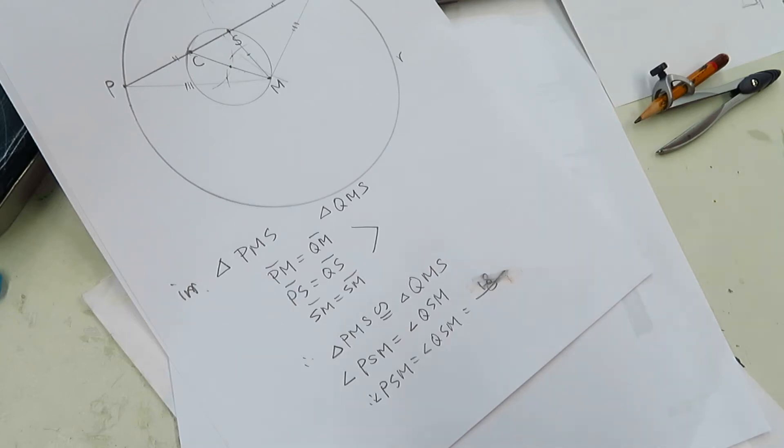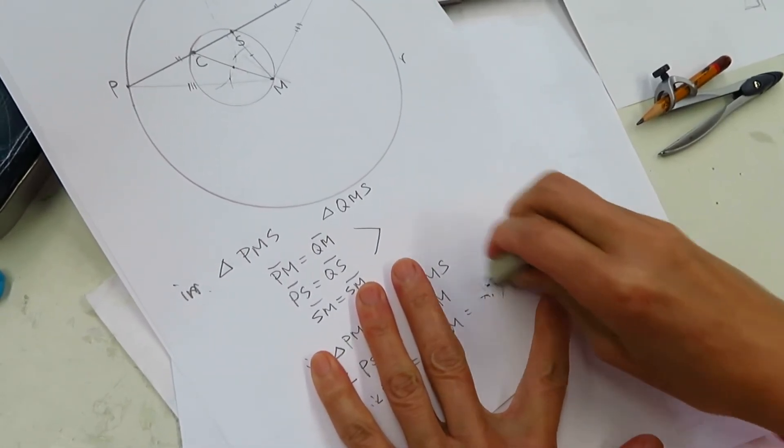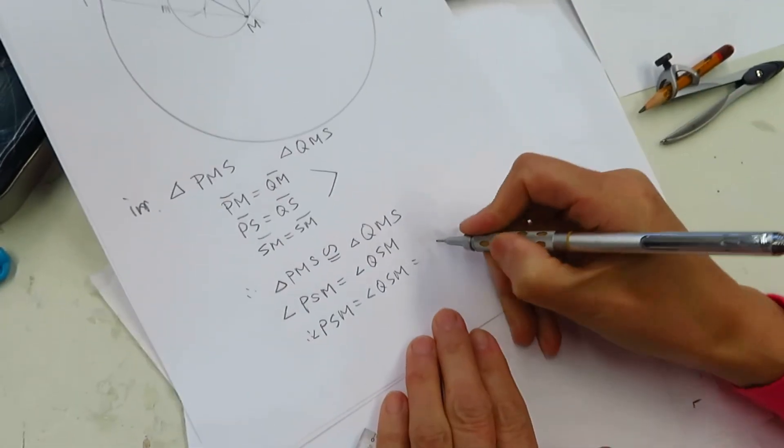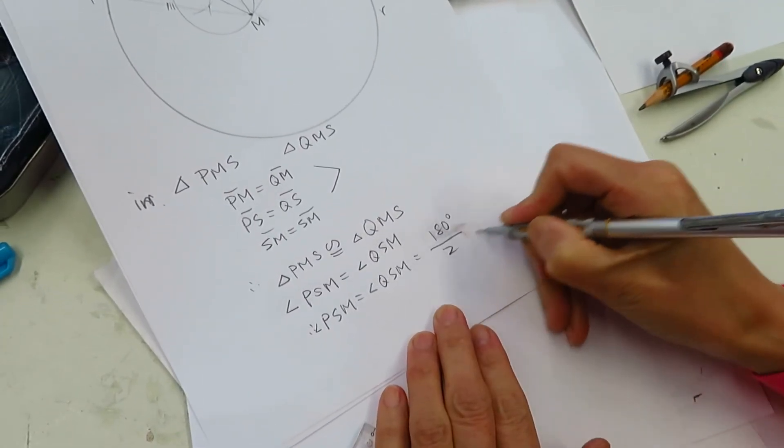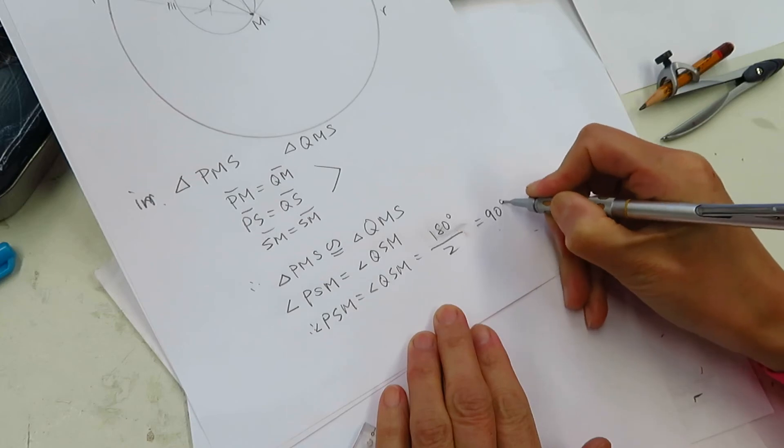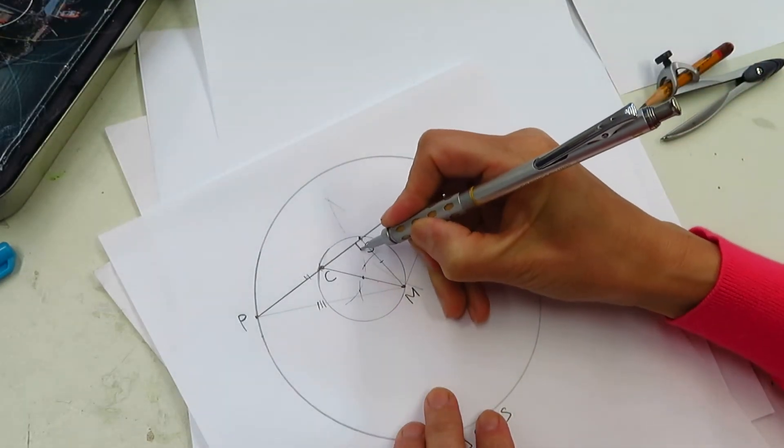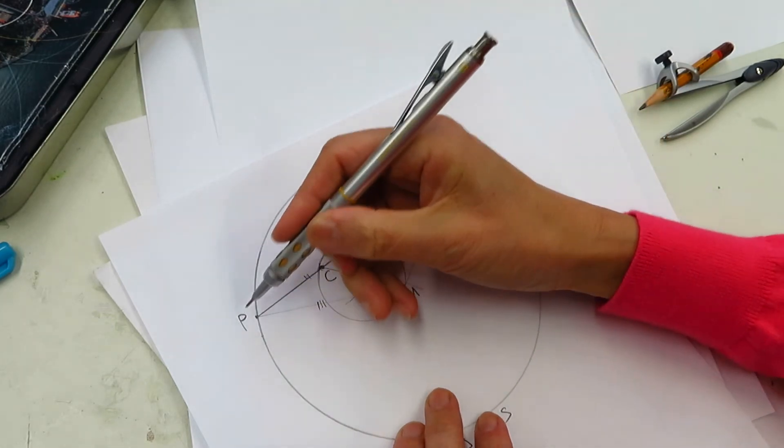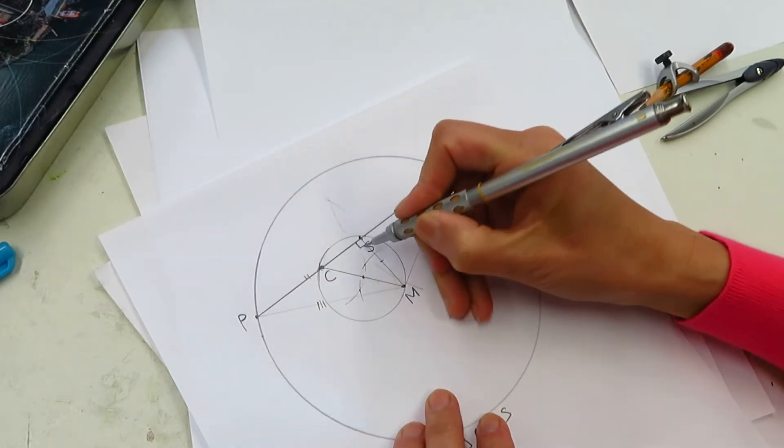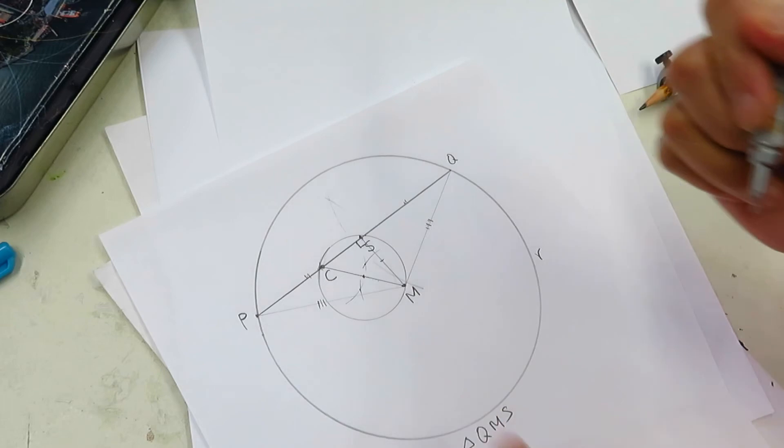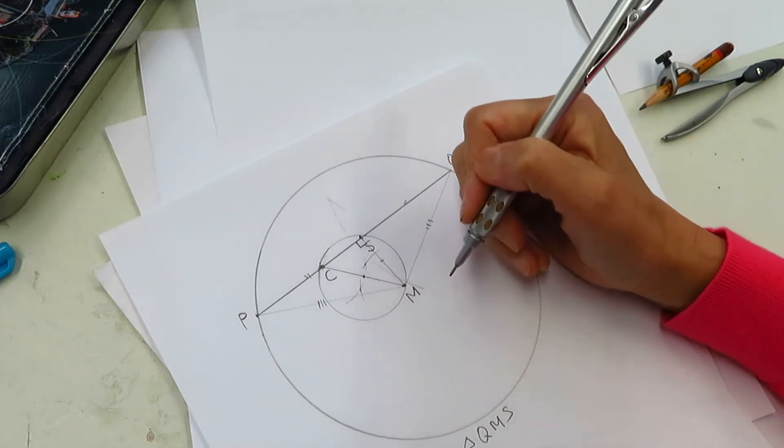PSM equal QSM equal to 180 degrees divided by 2 equals 90 degrees. So we know this is 90 degrees. PSM is 90 degrees. It's perpendicular. They are perpendicular.